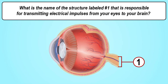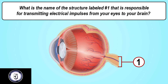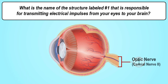What is the name of the structure labeled number one that is responsible for transmitting electrical impulses from your eyes to your brain? The answer is the optic nerve.